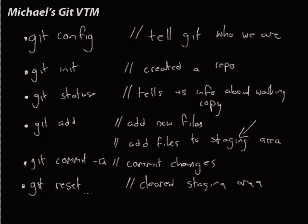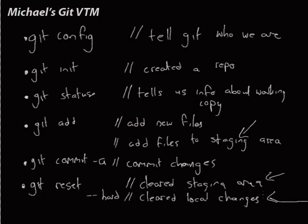git reset --hard cleared our local changes. Make sure you don't get these mixed up: git reset by itself clears the staging area but our local changes are still there. git reset --hard actually changes our files back to how they were at the last commit. This is useful if you've completely broken something, but make sure you don't type it by accident because it will bite you.